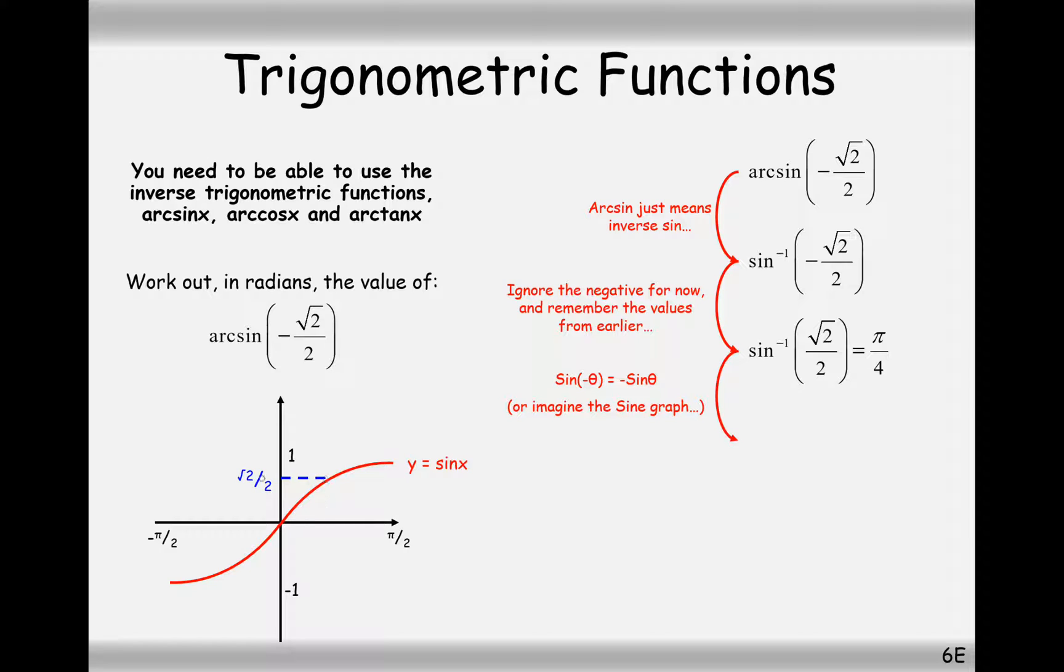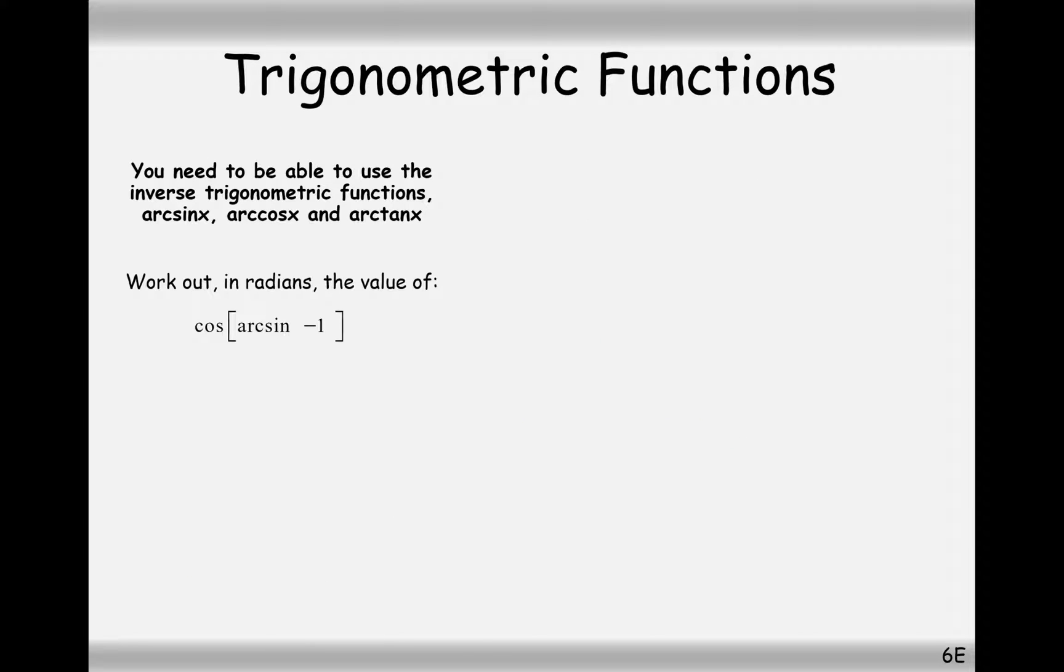So this is what I was talking about here. The root 2 over 2 angle is going to give us pi by 4. But if it's minus root 2 over 2, then it's going to give us negative pi by 4. So in this case here, the answer is negative pi by 4, or negative 45 degrees. So you can see this here, that if we're looking for minus root 2 over 2, find root 2 over 2 normally, but then because the sine graph works in this way here, where it's rotationally symmetric around the point 0, 0, 180 degrees, it's going to be minus pi by 4.